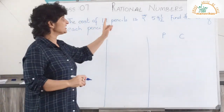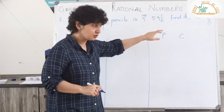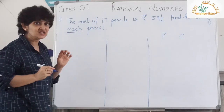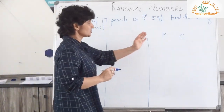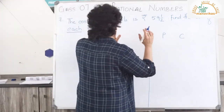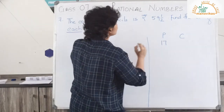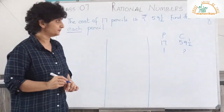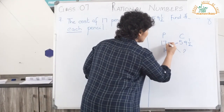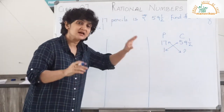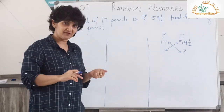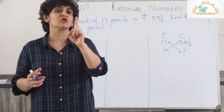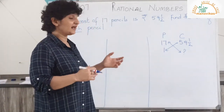Next, question 7: the cost of 17 pencils is rupees 59 and a half. Find the cost of each pencil. The word 'each' means find the cost of one pencil. So you're comparing the number of pencils and their cost. When the cost of more is given and you have to find the cost of one, then you divide.